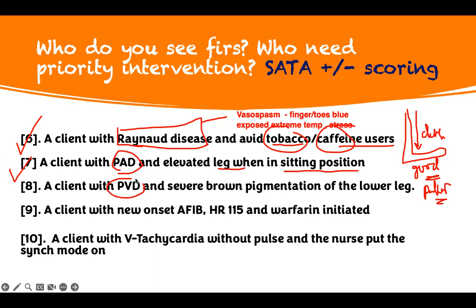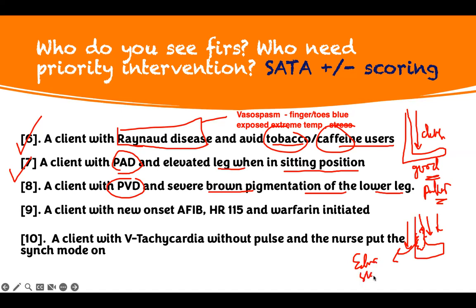A client with peripheral venous disease and severe brown pigmentation of the lower extremities. Peripheral venous disease — the problem is that too much blood pools in the leg. When blood pools in the leg, it pulls into the tissue and creates edema. The skin becomes thick. The hemoglobin seeps into the skin and the color changes, causing brown pigmentation. That is why you need to elevate the leg to send blood back to the heart. Edema, thick skin, and brown pigmentation are expected findings in peripheral venous disease — I don't need to see this patient; that is normal for them.